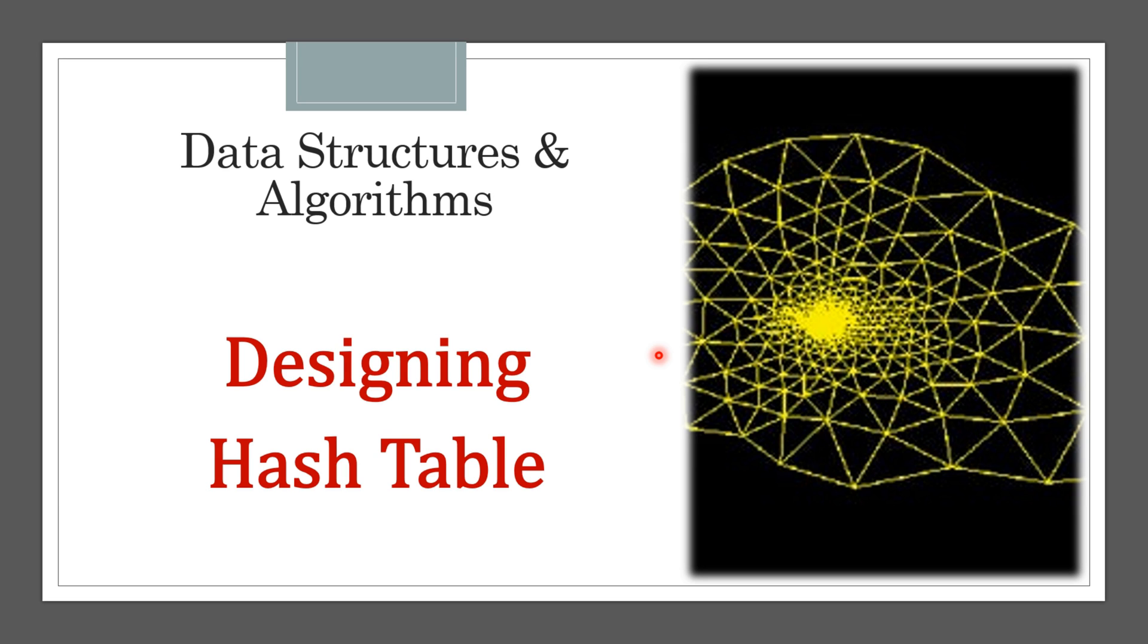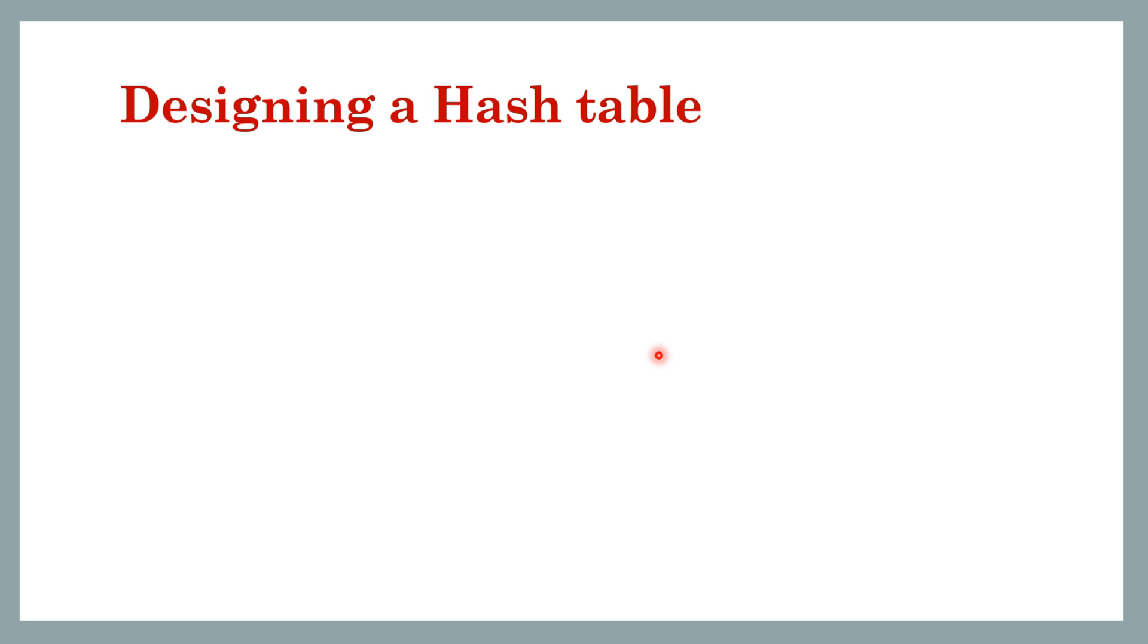In this video we will see the steps of designing a hash table. There are two important components when we are designing a hash table. The first component, and the most important, is choosing a good hash function. The second component is collision resolution. Now let's see each of these components one by one.